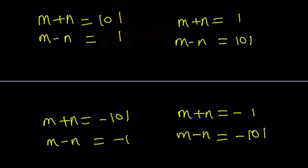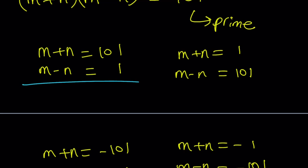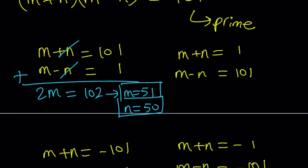Let's go ahead and solve each one. So there are like four systems we have to solve. But they're all solved the same way. Easy. You're just going to add the equations. In other words, we can use elimination. n cancels out. We end up with 2m equals 102, which implies m equals 51. Since their difference is 1, n must be 50.